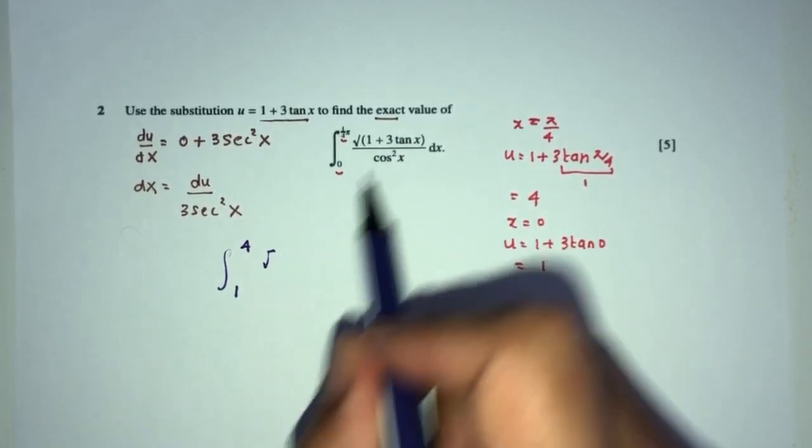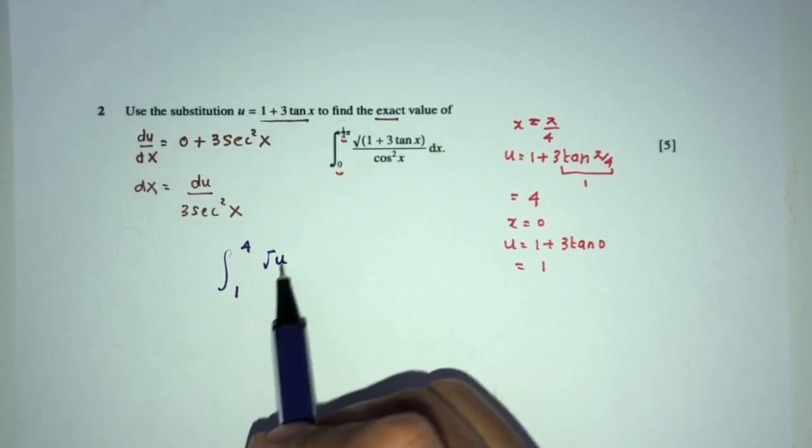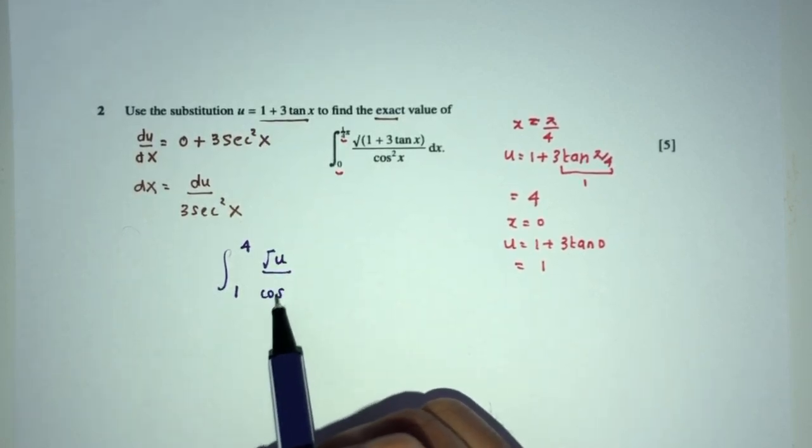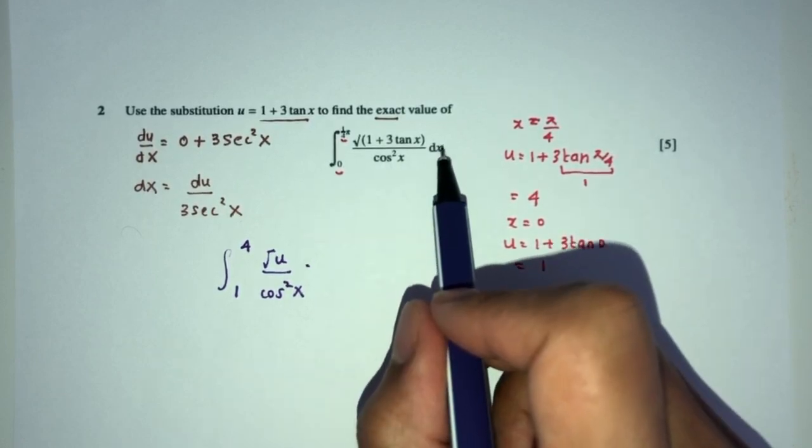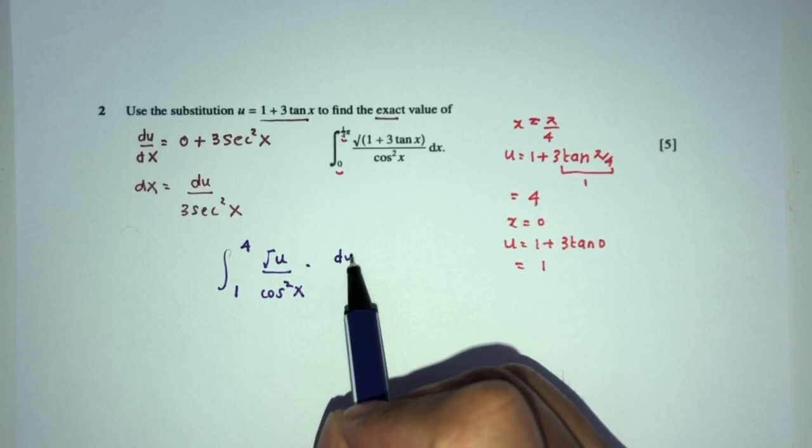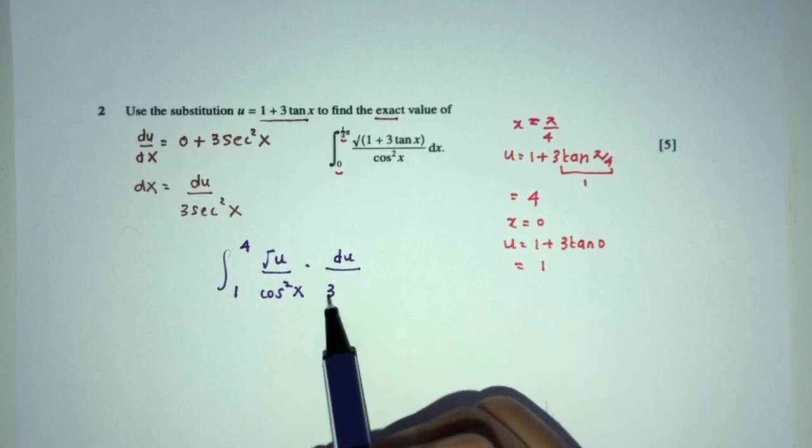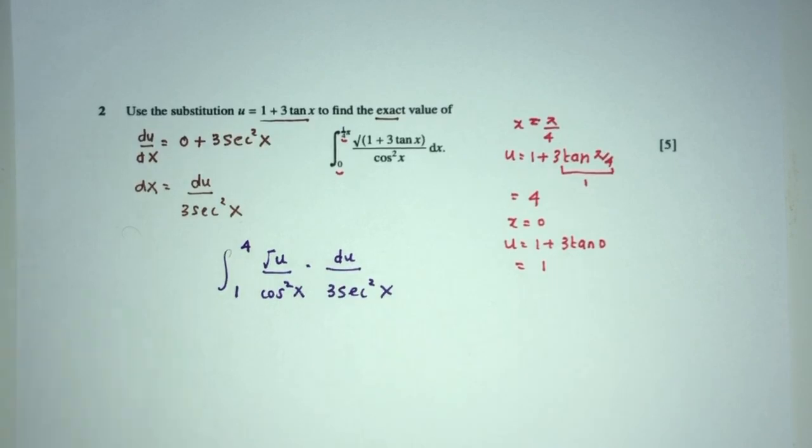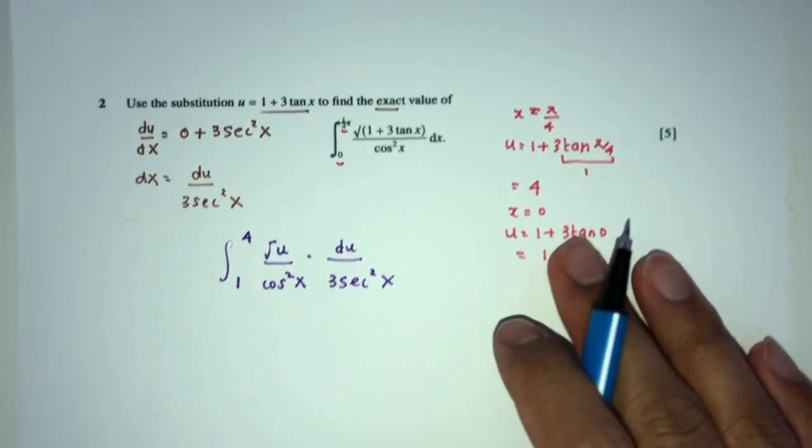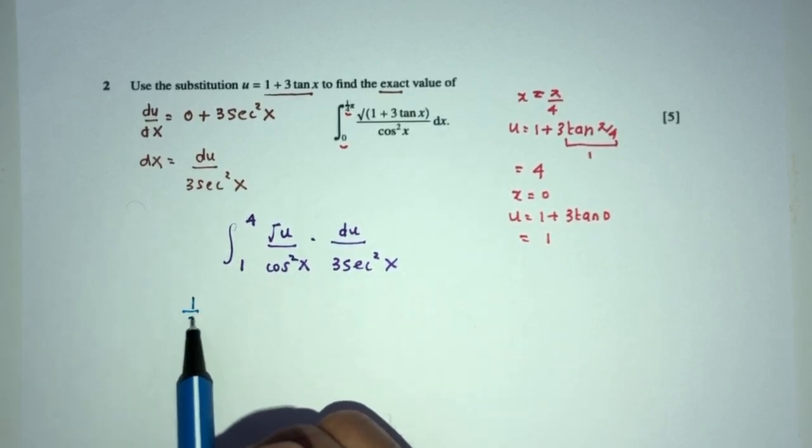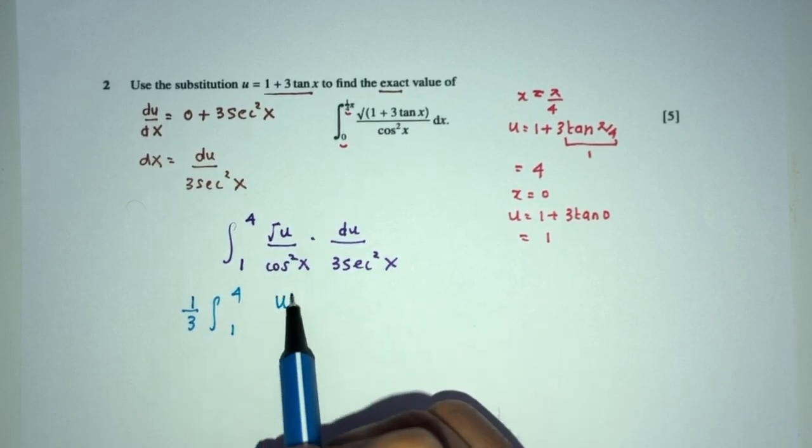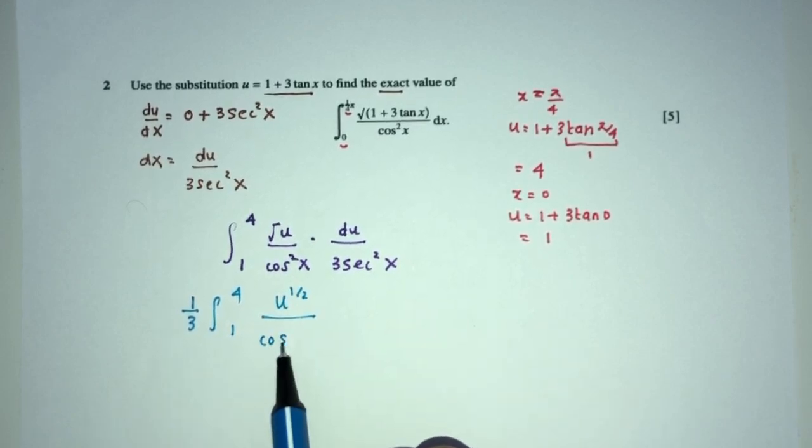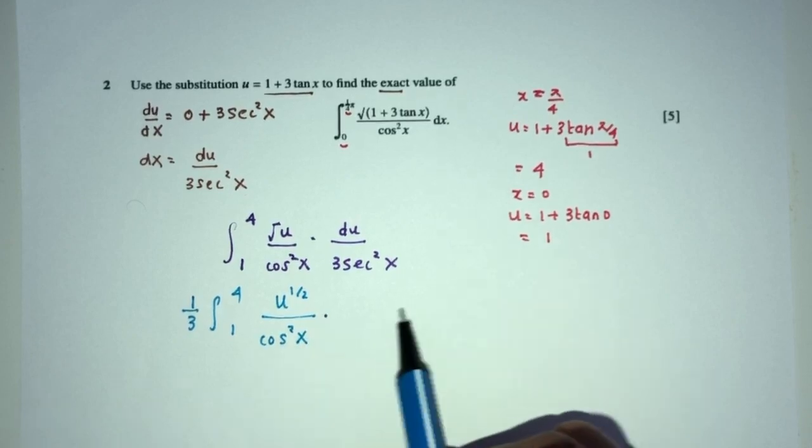And with this one, as you have seen, it is simply u divide by cos² x. Now dx is the value of du over 3 sec² x. Now obviously we can simplify this further. For example, 3 is only a multiple, can be removed outside. So 1/3 outside. 4 and 1, this will be u^(1/2) over cos² x. Now du is du.